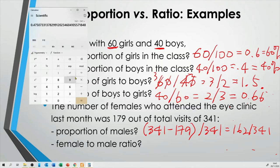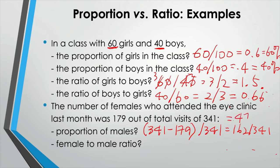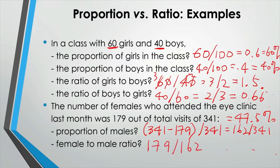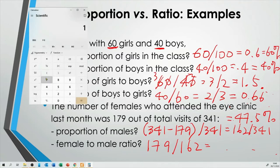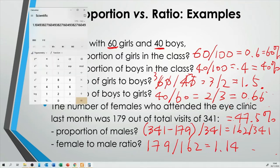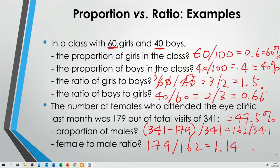That gives approximately 47%, which is the proportion of males. And then the female to male ratio is 179 over 162, which is approximately 1.1. So that is the female to male ratio.